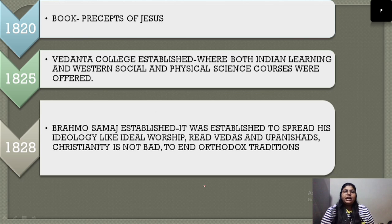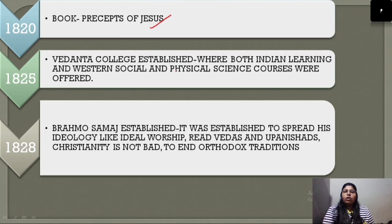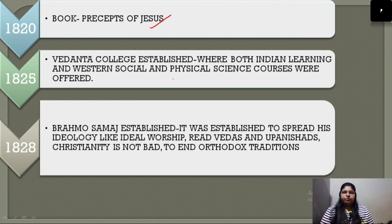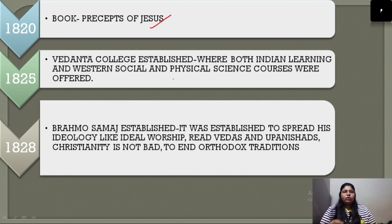In 1820, Raja Ram Mohan Roy published a very famous book called Precepts of Jesus. In 1825, the Vedant College was established, where they did not focus solely on Indian education but offered Western Social and Physical Science courses alongside Indian learning. He never opposed Western education and was very liberal in his thinking, believing Western education promoted rational thinking at a time when orthodox traditions dominated India.